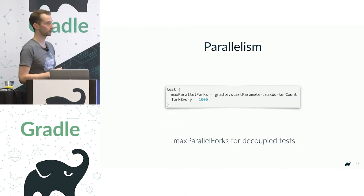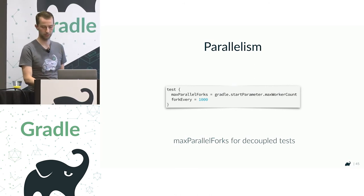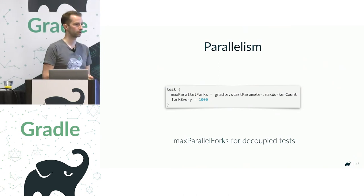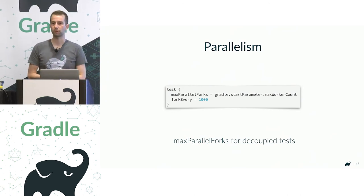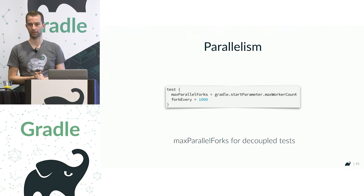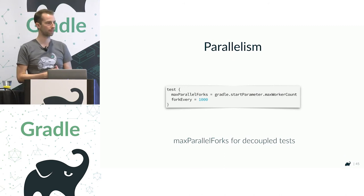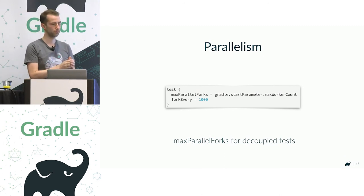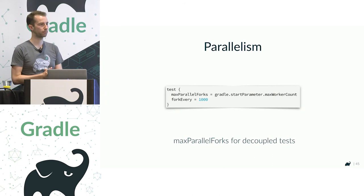If you can't use --parallel, tests are probably the most expensive thing in your build. If the tests in one test task are able to run in parallel, you can tell Gradle to run multiple forks — for instance, four parallel forks — pushing tests to four parallel workers. That's one way to parallelize the most expensive part of your build even when --parallel isn't an option.